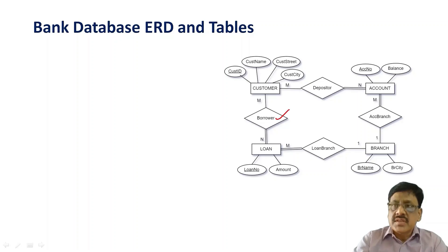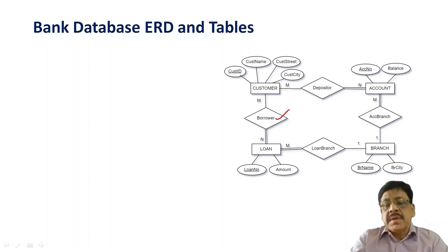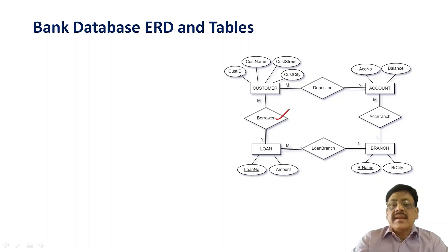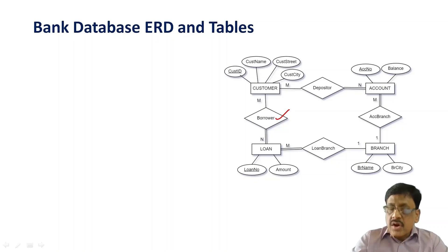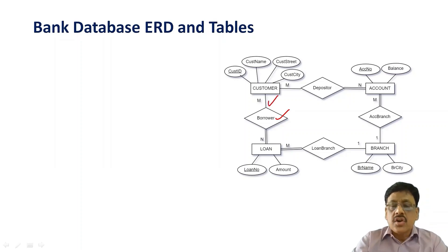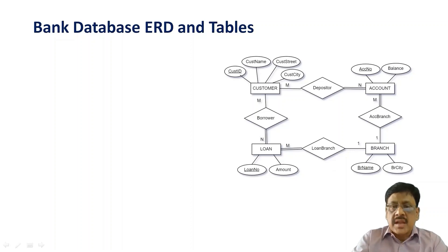If you look at borrowers, it is a binary many-to-many relationship between customer and loan. That indicates a customer can have more than one loan or may not have any loan, because it is partial participation. But all loans must belong to a customer, and a loan can be a joint loan taken by more than one customer.